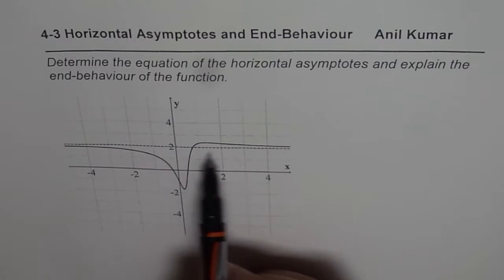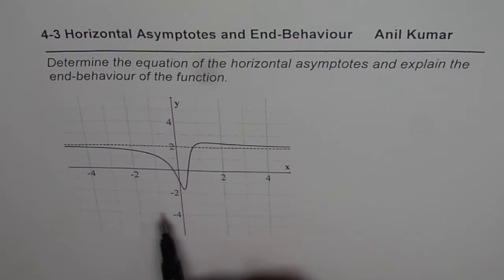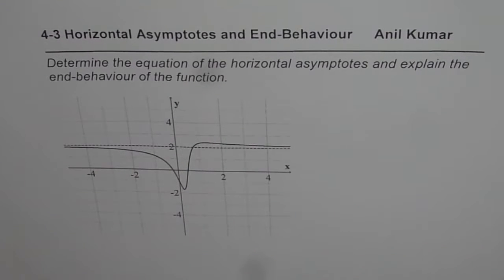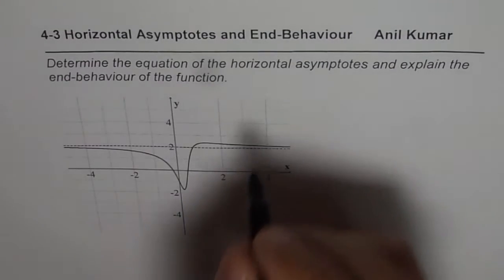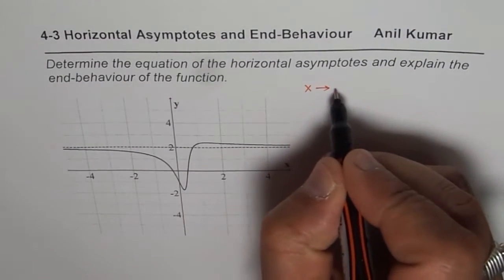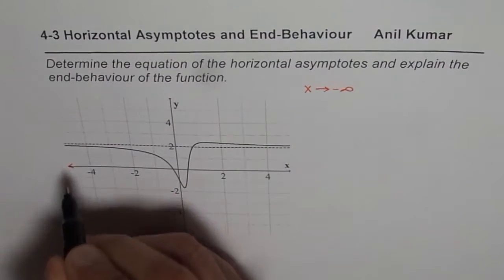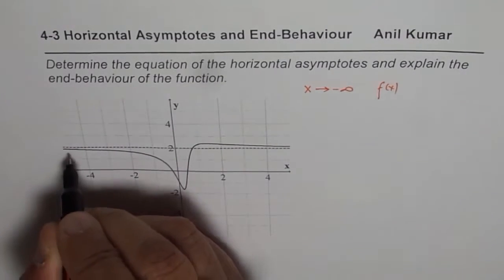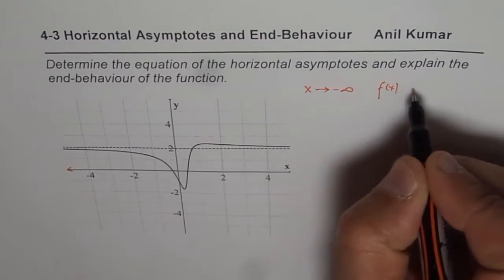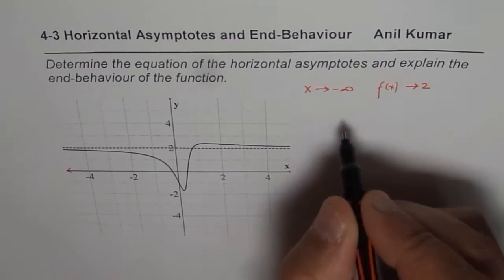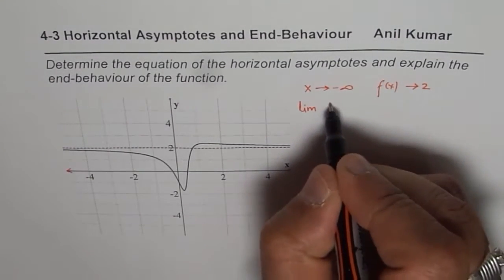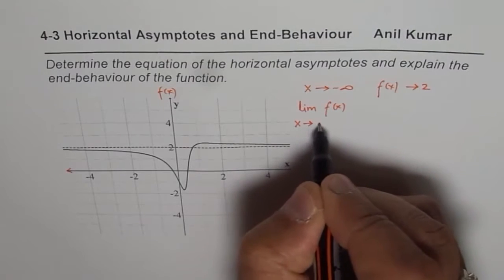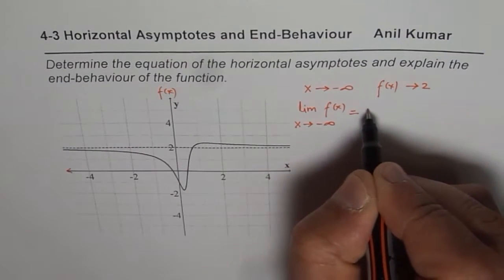This dotted line shown here is the horizontal asymptote for the given function, whose graph is in the bold line. What you notice is that as x approaches negative infinity, f of x — the function — approaches the value 2. You could also say that the limit of the function f of x as x approaches negative infinity is equal to 2.